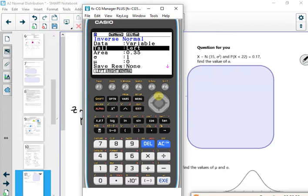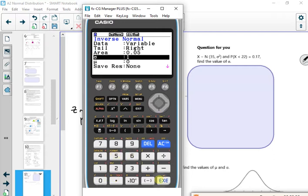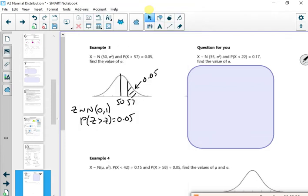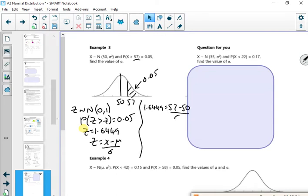So I've got my inverse, it was a right tail. It was 0.05, that's a 6, 1.6449. So my z value is 1.6449. If I use z equals x minus mu over sigma, so my 1.6449, the x value is 57, mu is 50, this time over sigma. So if I just switch them over, sigma is 57 minus 50 over 1.6449.